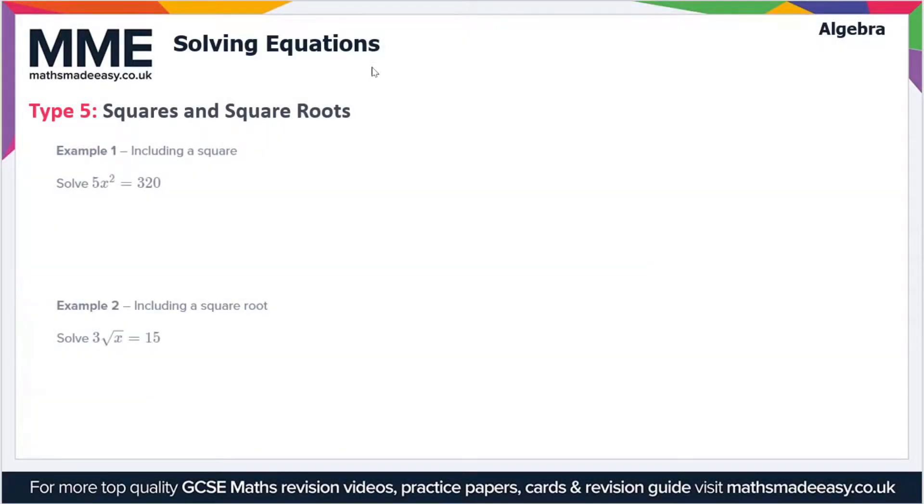Welcome to the Maths Made Easy tutorial on solving equations. This is the last video on this topic—there are three other videos, so if you haven't watched those yet, I recommend you watch those first. Here we're going to deal with equations where there are squares and square roots. In this first example, we have 5x² equals 320.